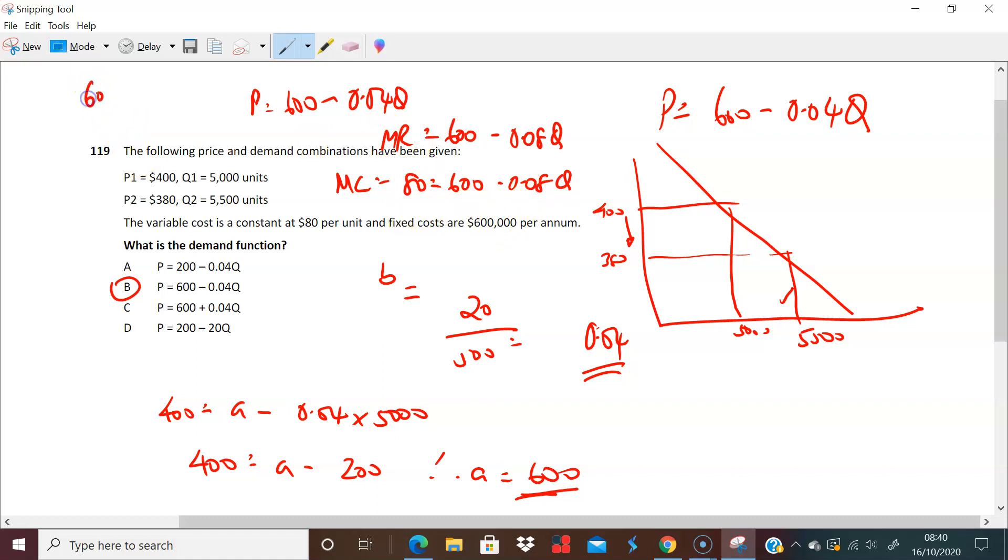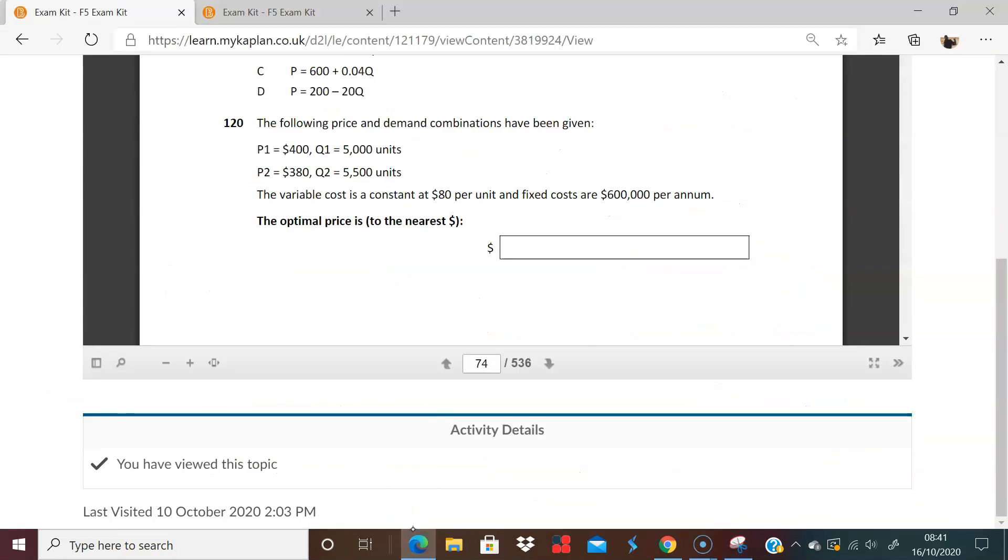So let's play around with this. So I'm going to have 600 minus 80 equals 0.08Q, so that's 520 equals 0.08Q. So what is Q? Q is 520 divided by 0.08. Let's just do that. 520 divided by 0.08, I get 6,500. So my optimal Q is where Q equals 6,500. And the question is asking, therefore, the optimal price is...